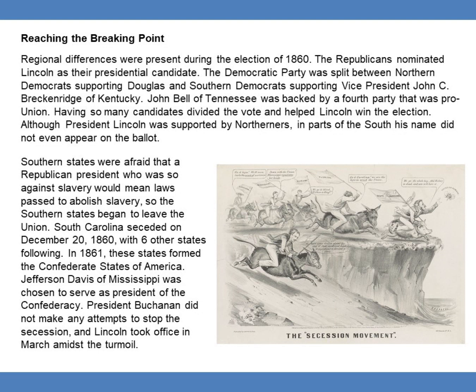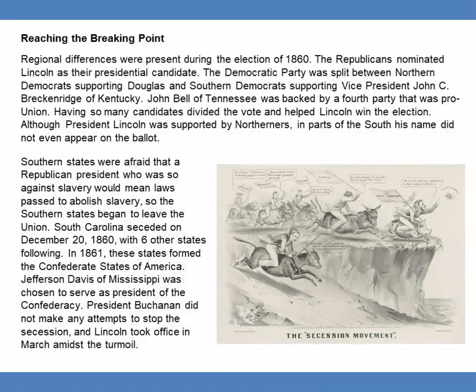Although President Lincoln was supported by Northerners and parts of the South, his name did not even appear on the ballot in some Southern states. Southern states were afraid that a Republican president who was so against slavery would mean laws passed to abolish slavery, so the Southern states began to leave the Union. South Carolina seceded on December 20th, 1860, with six other states following. In 1861, these states formed the Confederate States of America. Jefferson Davis of Mississippi was chosen to serve as president of the Confederacy. President Buchanan did not make any attempts to stop the secession, and Lincoln took office in March amidst the turmoil.